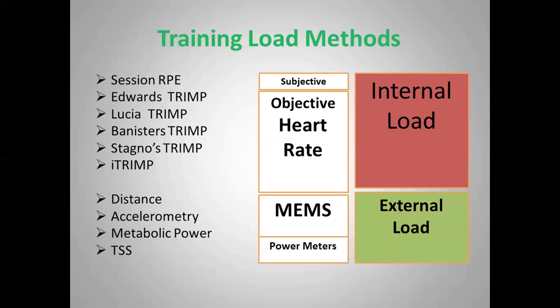Looking at all the load measures generally used — and that's not an exhaustive list — on the external load front we have subjective measures like session RPE, which have been really popular because of their ease of use. Then we have a number of objective heart rate methods, typically known as TRIMPs — and not all TRIMPs are equal. Then we've got all the MEMS devices giving us distance measurements, accelerometry, metabolic power in its various guises, and in cycling, metrics like the Training Stress Score.